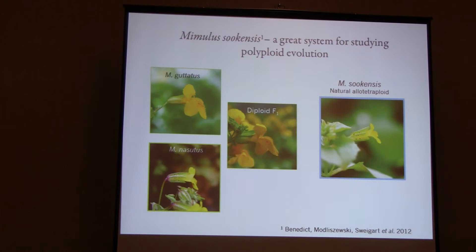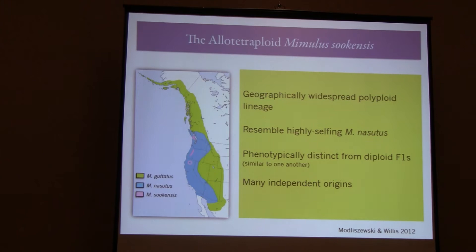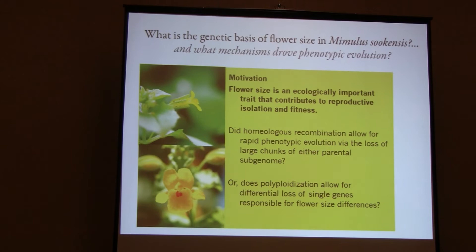How do you get from this diploid F1 to this small-flowered Mimulus suquensis? It's a geographically widespread polyploid lineage found in the valleys of western Oregon and the southern tip of Vancouver Island. It resembles nasutus and is phenotypically distinct from diploid F1s. Sequence data from six nuclear genes suggest many independent origins of this species. The question is: what is the genetic basis of flower size and what mechanisms drove this evolution? Flower size is an ecologically important trait that contributes to reproductive isolation and fitness.